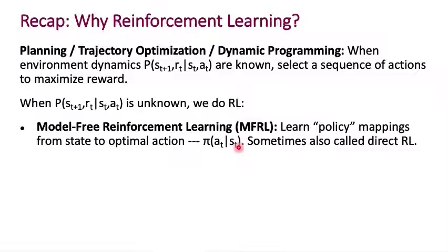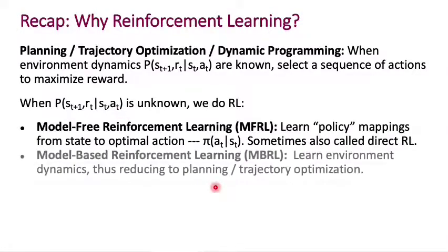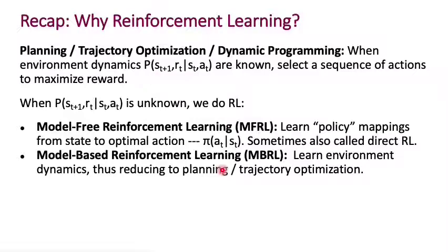Model-based reinforcement learning says: if the whole point of doing RL is that you don't know the state transitions and you don't know the rewards, then why not actually learn that directly? Why not learn the environment dynamics — P(s_{t+1}, r_t | s_t, a_t), or equivalently P(s_{t+1} | s_t, a_t) and r(s_t, a_t, s_{t+1})? If you learn the environment dynamics, you've suddenly reduced your setting to the setting you had at the beginning, where planning, trajectory optimization, and dynamic programming can handle it.